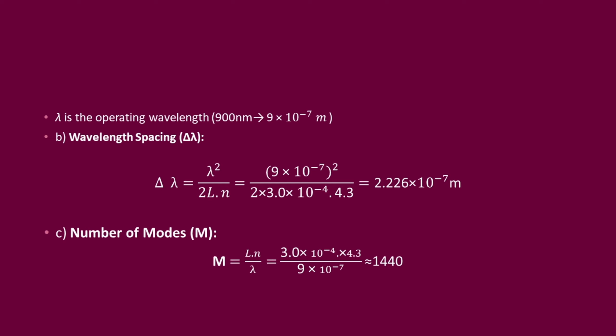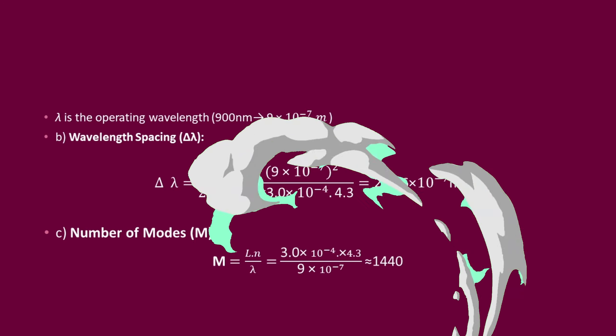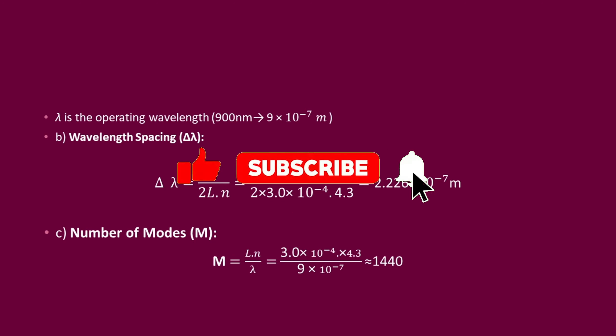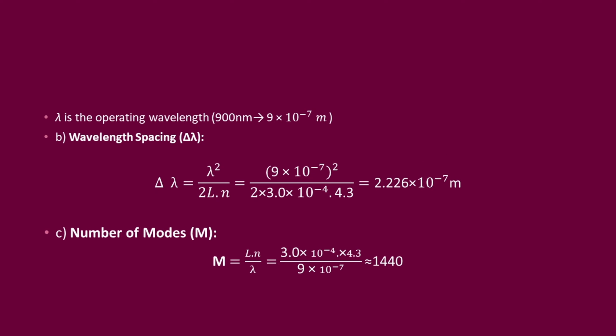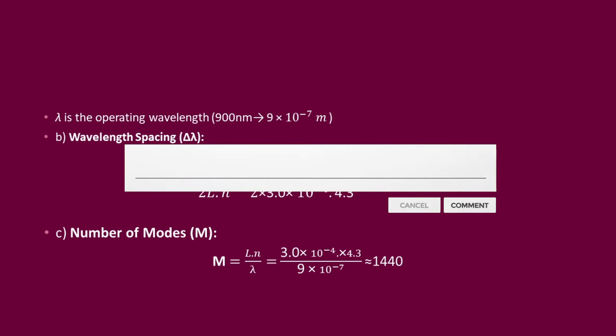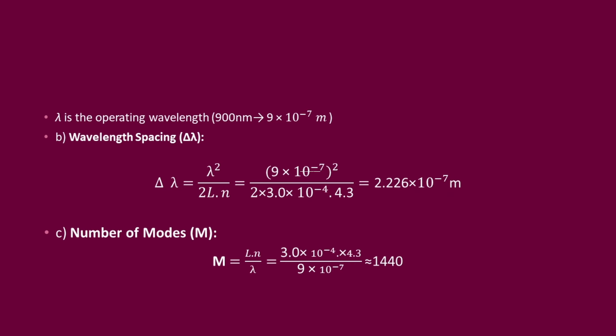Finally, for number of modes, using the formula m equals Ln divided by lambda: 3×10⁻⁴ × 4.3 divided by 9×10⁻⁷ gives approximately 1440 modes. If you haven't subscribed to my channel, please subscribe and write your doubts whenever you have any issues in fiber optics or microwave subjects. Thank you.